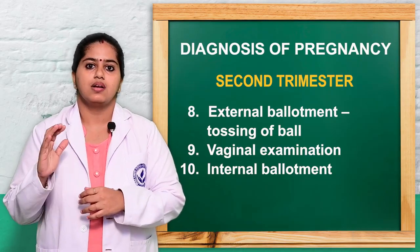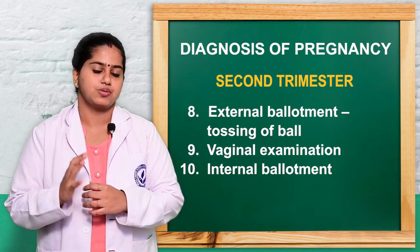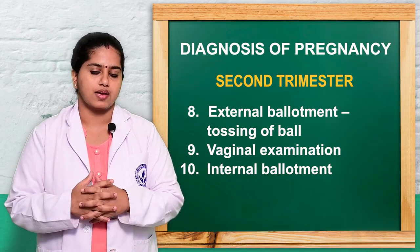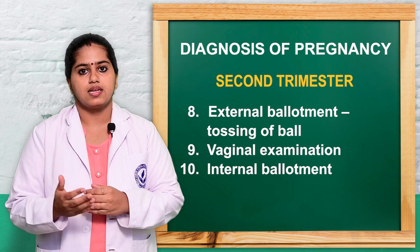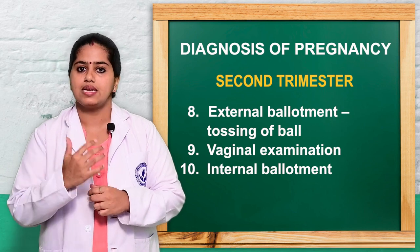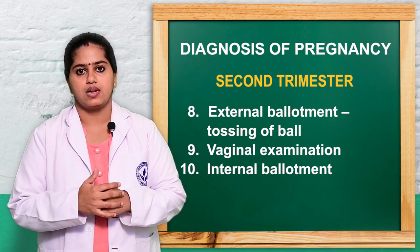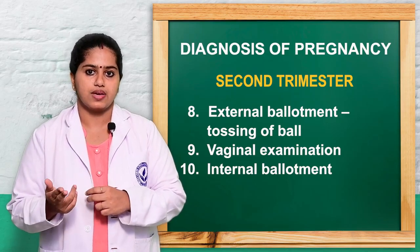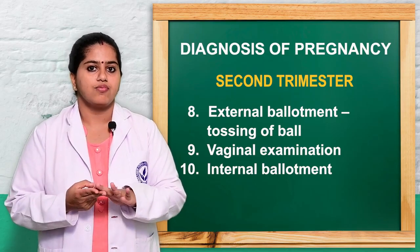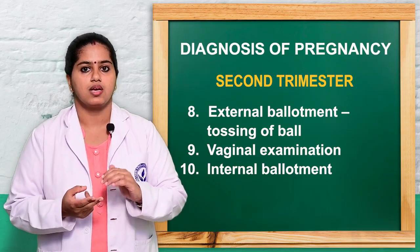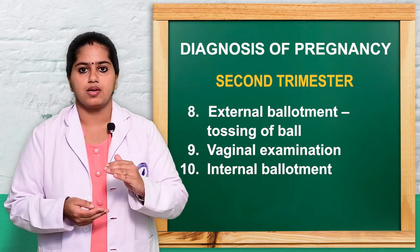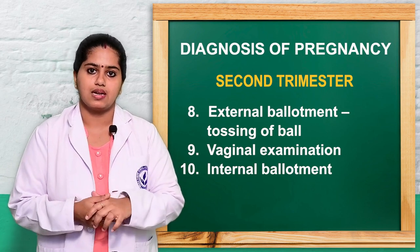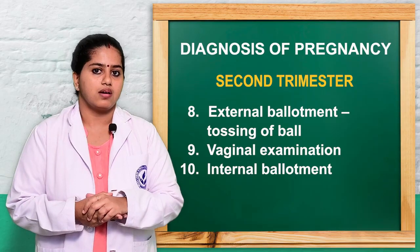On vaginal examination, all vaginal changes due to increased vascularity are present, including Jacquemier's sign, Osiander's sign, and Chadwick's sign. Internal ballotment can also be performed — by moving the fetus with the fingertip during vaginal examination, one can identify which part of the fetus is being felt, and when pushed, the fetus moves and can be felt by the other hand placed on the abdomen.